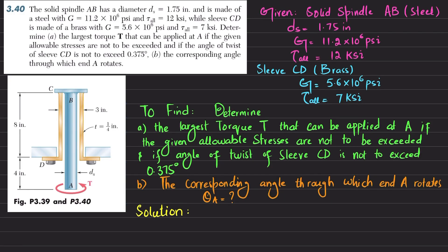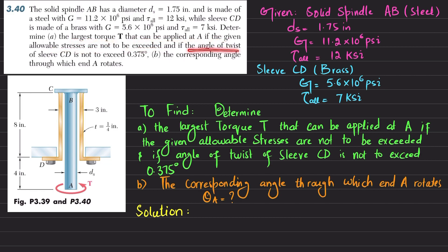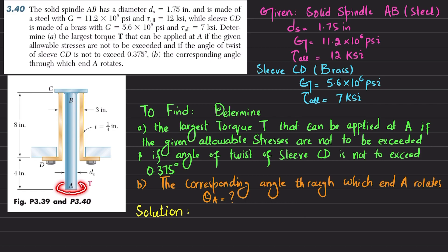Welcome back. Problem 3.40: the solid spindle AB has diameter 1.75 inches and is made of steel with allowable shearing stress of 12 ksi. Sleeve CD is made of brass with G = 5.6 × 10⁶ psi and allowable shearing stress of 7 ksi. Determine the largest torque T that can be applied at A, given that allowable shearing stresses are not exceeded and the angle of twist of sleeve CD does not exceed 0.375 degrees. Part B asks for the corresponding angle through which end A rotates. You can see the solid spindle is joined with the brass sleeve, and at end A a torque T is applied.